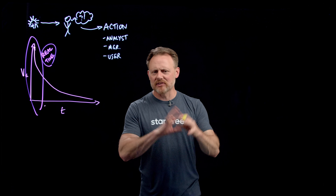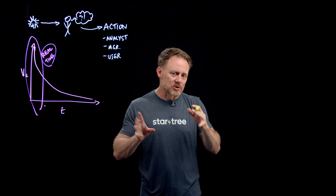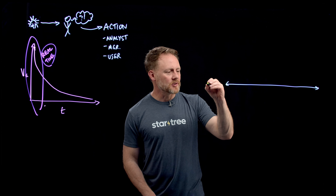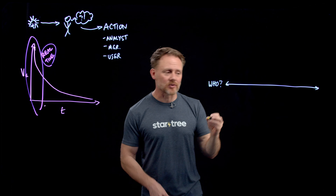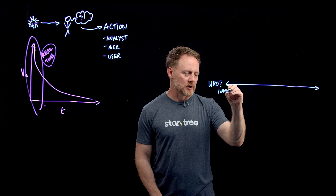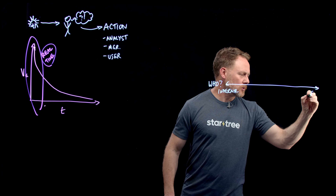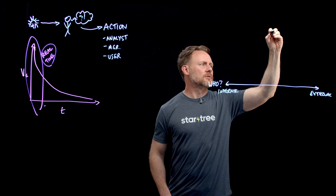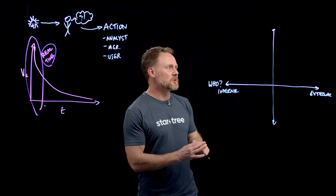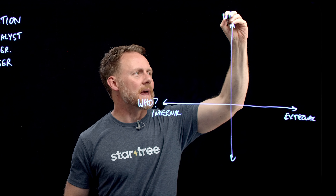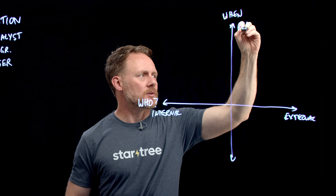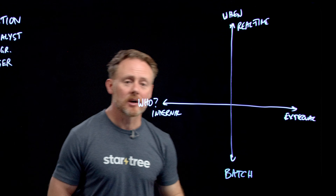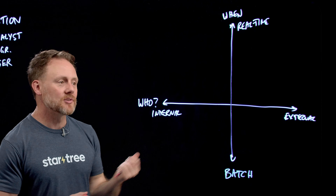Let me propose a taxonomy to make sense of the landscape and the different kinds of systems that might address different needs. We'll use a who axis — from internal users to external users — and a when axis — from real time up top to batch down below. Let's put some systems on the board.